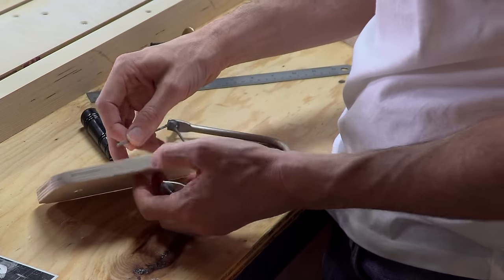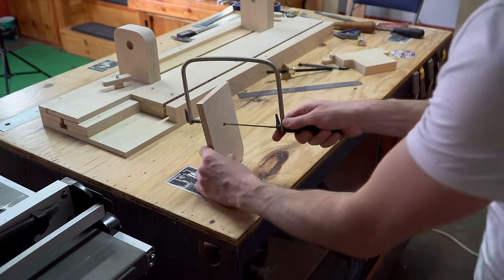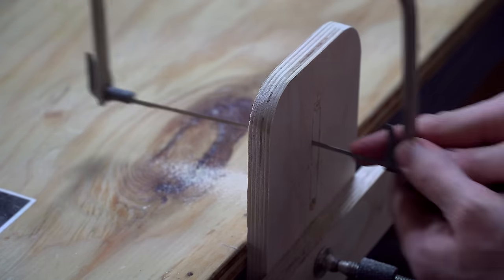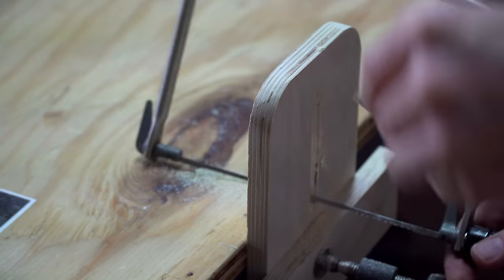I had originally intended on using a jigsaw to cut these, but the hole diameter was so small I couldn't get my jigsaw blade into the hole. So, I disassembled my coping saw, threaded it through the hole, and then used the coping saw to make this cut.